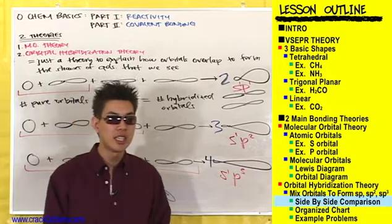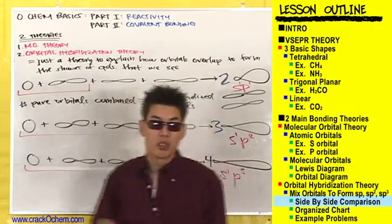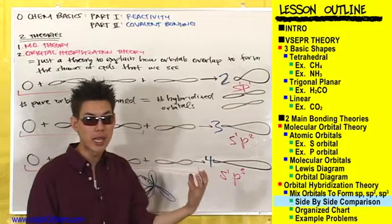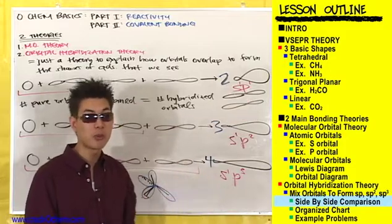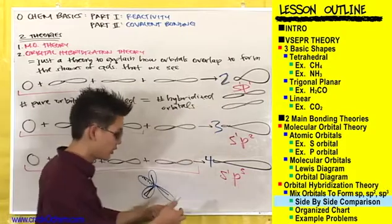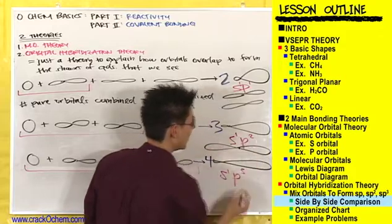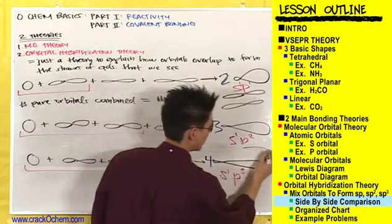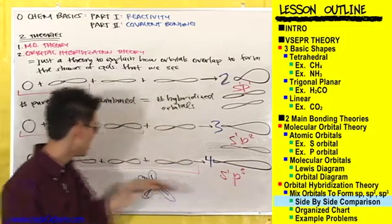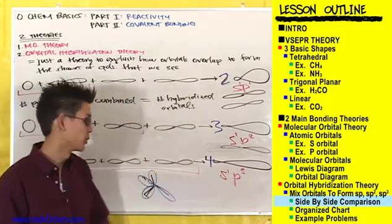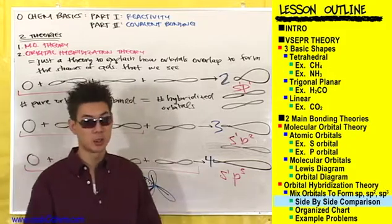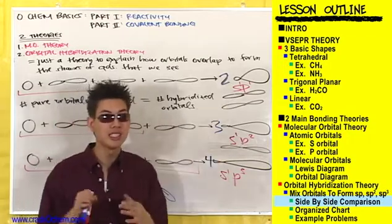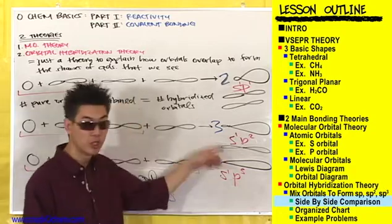The last thing to point out is what happens to the P orbitals that aren't hybridized. When we mixed one S orbital with one P orbital, there were still two P orbitals we didn't mix — and they didn't disappear. They remain pure P orbitals. So I should also draw one more pure P orbital for this sp hybridized atom. When you get to sp3, we combine all of the pure P orbitals to make four hybridized orbitals — but the pure orbitals don't just disappear; they're still there.